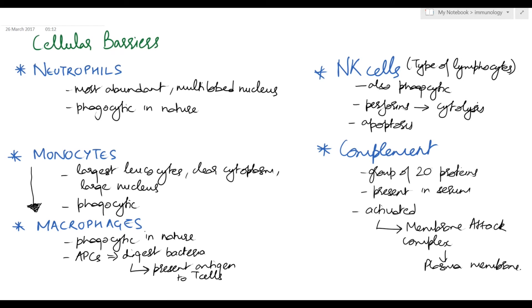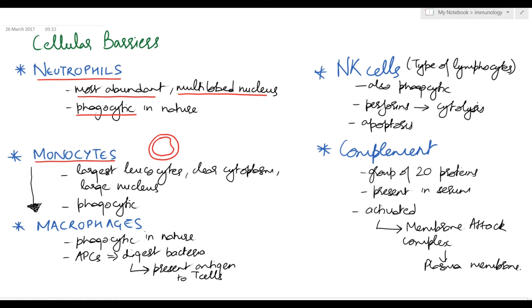Now let's talk about the cellular barriers in detail. The first cellular barrier is neutrophils — they are the most abundant leukocytes in the body and have a multi-lobed nucleus and granular cytoplasm, so they are also known as granulocytes. They are phagocytic in nature, meaning they eat the pathogen and digest it. Then, monocytes are the largest leukocytes; they have clear cytoplasm and a large nucleus, so they are known as agranulocytes. They are also phagocytic in nature.